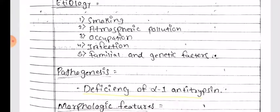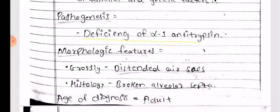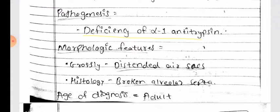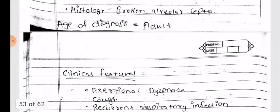Etiology of emphysema: smoking, atmospheric pollution, occupation, infection, and familial and genetic factors. Pathogenesis: deficiency of alpha-1 antitrypsin. Morphological features: grossly distended air sacs; histologically, broken alveolar walls.